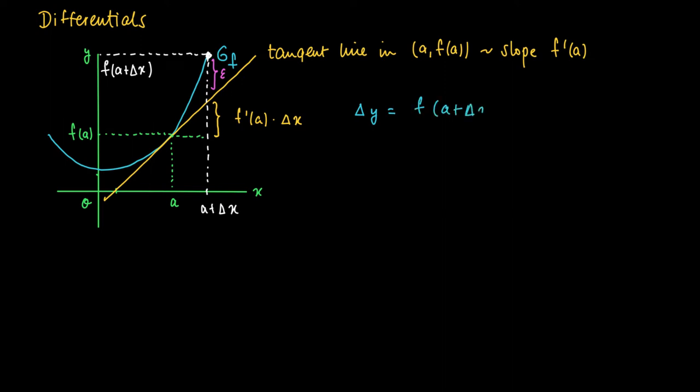So the actual change Δy equals the estimated change. Δy equals f(a + Δx) minus f(a). It's the estimated change along the line, so f'(a) times Δx plus the purple one. That's the total change, the precise change in function value.